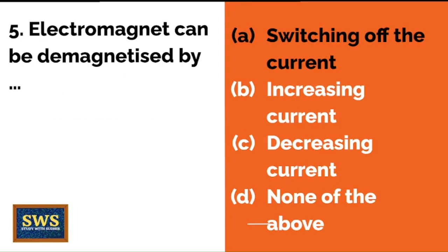An electromagnet can be demagnetized by switching off the current, increasing the current, decreasing the current, or none of the above? A is the correct option — switching off the current.